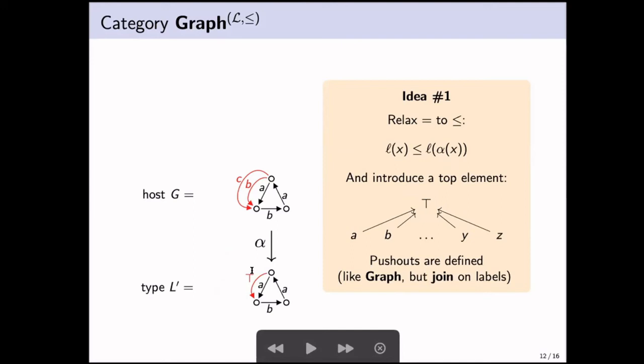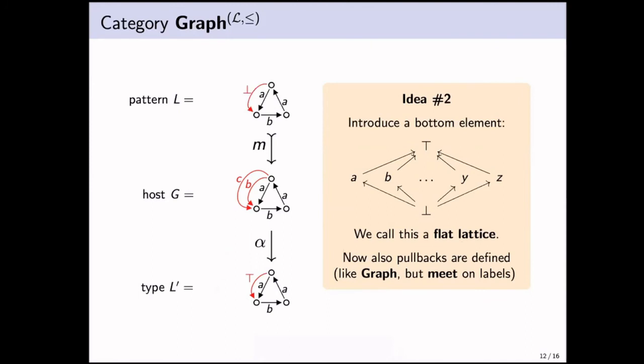Our idea was to relax the equality to be less equal, and then to introduce a top element. Then the edges of C and B map into the red edge with top over here. And then pushouts are still defined. You get the same graph as in graph, but you compute the join on the labels. For symmetry, we thought of introducing a bottom element as well. So now you can think of pattern L as specifying that alongside this A edge, there should also be an additional edge, but we do not care about its particular label. And also pullbacks are defined. It's just like in graph, but now you take the meet on the labels.